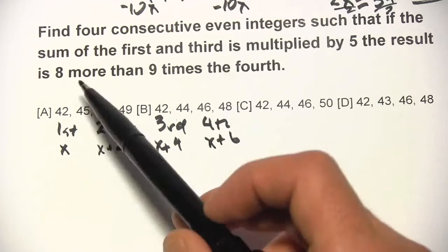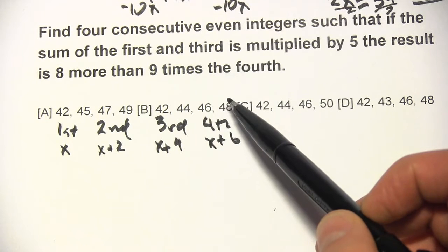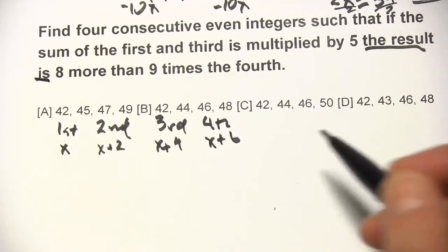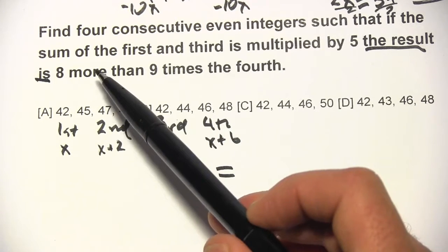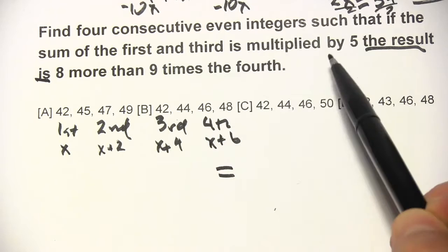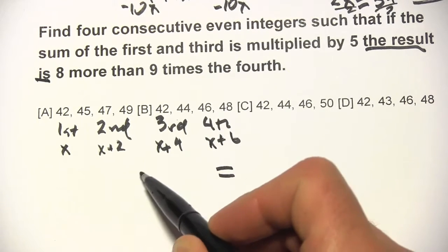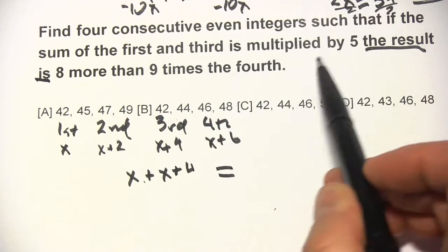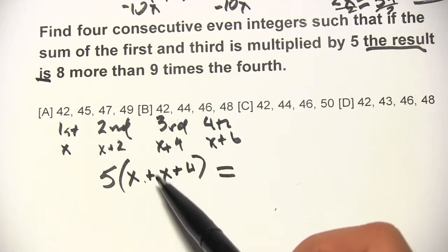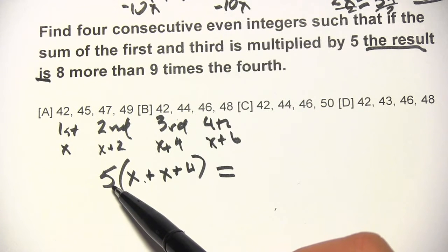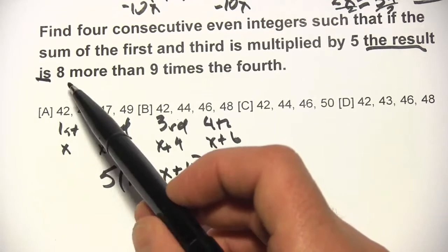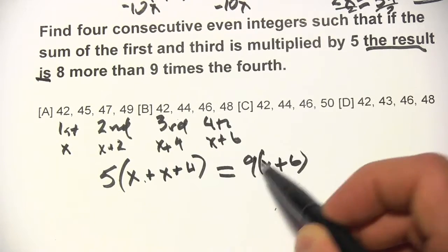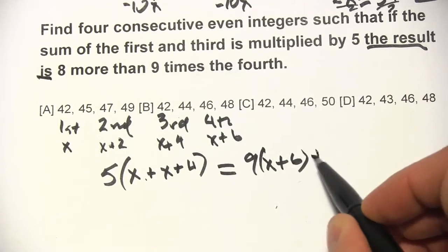It says: if the sum of the first and third is multiplied by 5, the result is 8 more than 9 times the fourth. The word 'is' gives us our equal sign. On the left side, the first is x and the third is x plus 4, so their sum is x plus x plus 4, and we multiply that by 5. On the right, the fourth is x plus 6, so 9 times the fourth is 9 times x plus 6, and 8 more than that is plus 8.